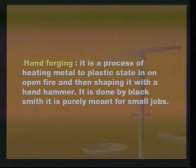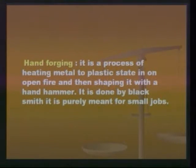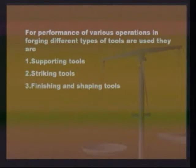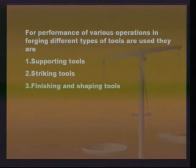Hand forging is a process of heating metal to plastic state in an open fire and then shaping it with a hand hammer. It is done by a blacksmith and is purely meant for small jobs — mainly for repairing and other small works. For performance of various operations, different types of tools are used in forging: supporting tools (which support the workpiece during working), striking tools (which apply pressure or blows), and finishing and shaping tools (used after the forging operation to remove small amounts and finish the workpiece).